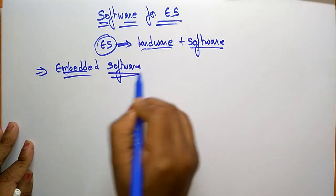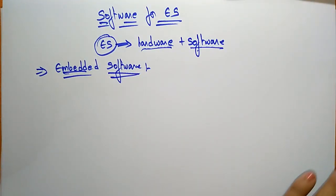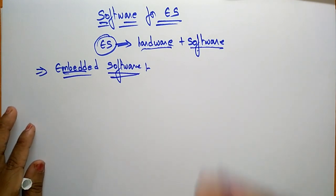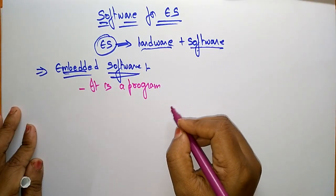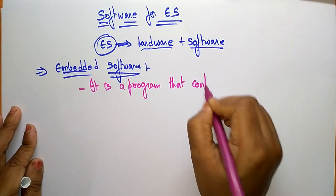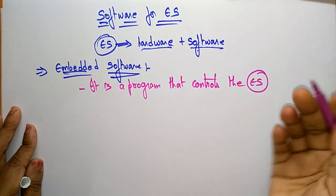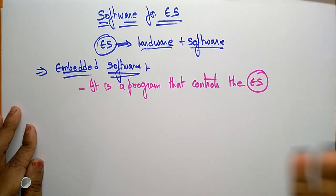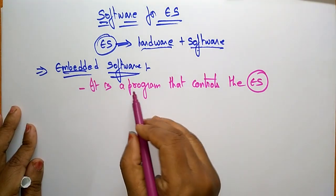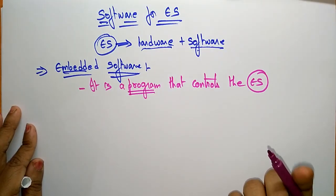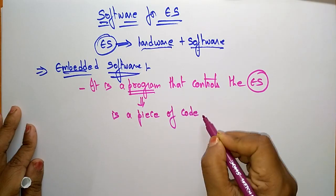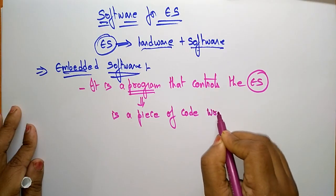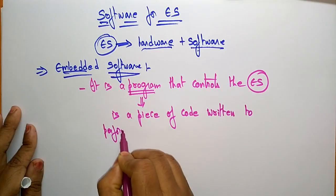Embedded software. The embedded software is nothing but a program that controls the embedded system. So the embedded system is any system — whether you have taken a microcontroller, mobile phone, or automobiles. That system will be controlled by a program, and that program you call it a software. So this program is nothing but a piece of code written to perform a task.